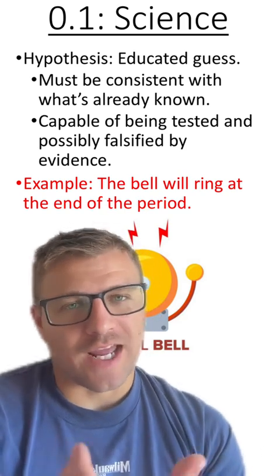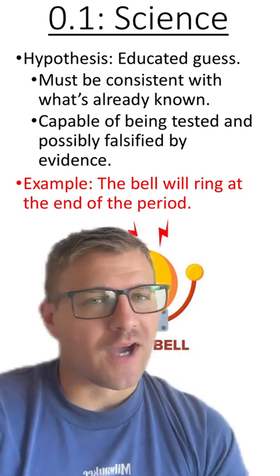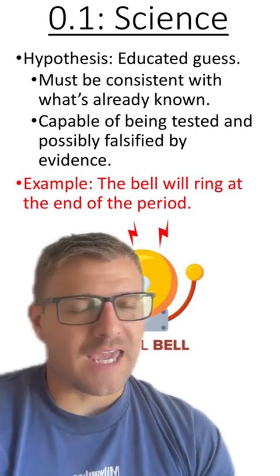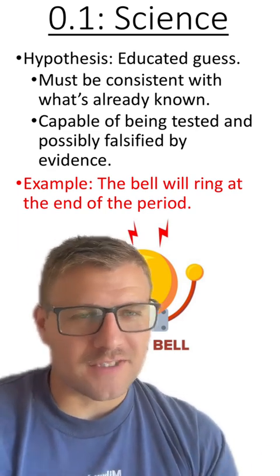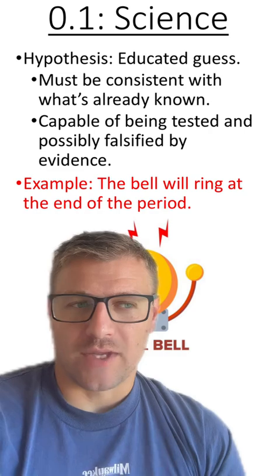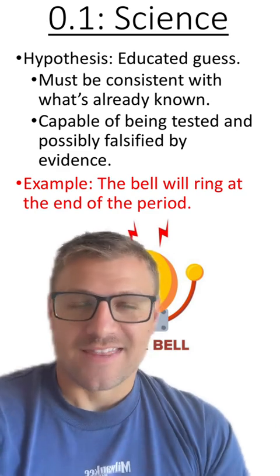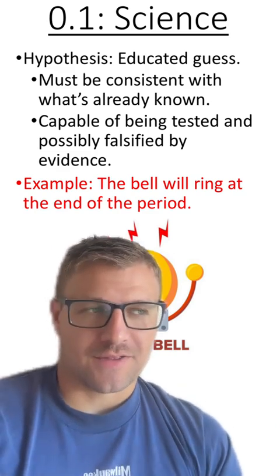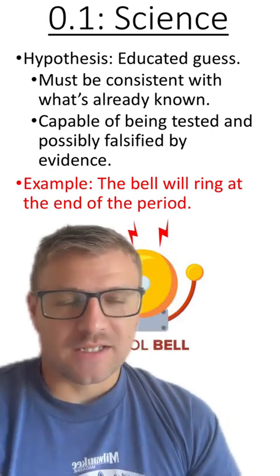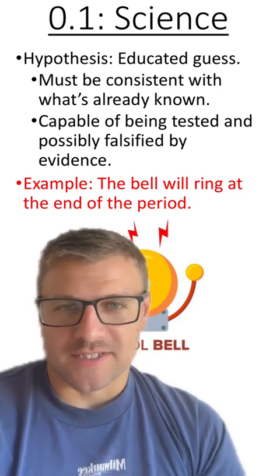Now within science, we have these things called hypotheses. And in biology and science, we usually just say that a hypothesis is an educated guess. But something that's really important about a hypothesis is that it's capable of being tested and possibly falsified by evidence. This just basically means that we have to be able to physically or scientifically test this hypothesis. And this hypothesis has to be able to be falsified, which means disproved. And typically, these hypotheses need to be consistent with the knowledge that we've already gained through experimentation.